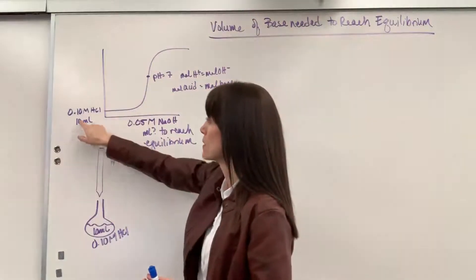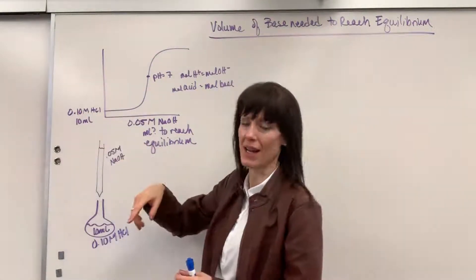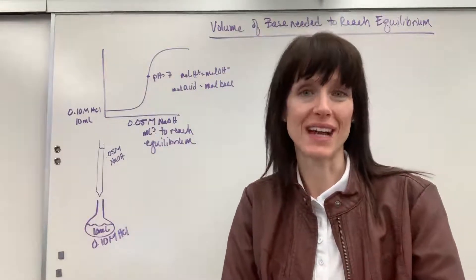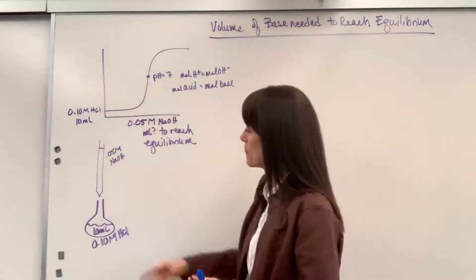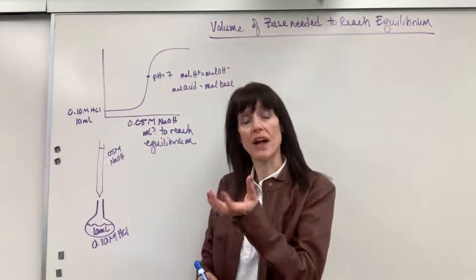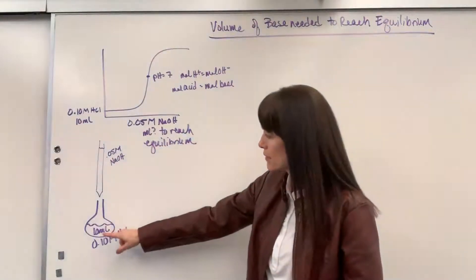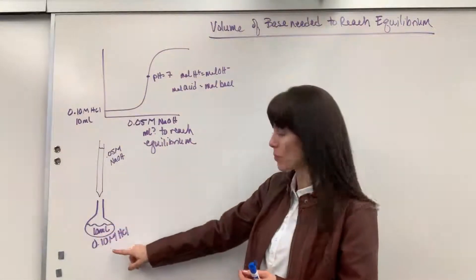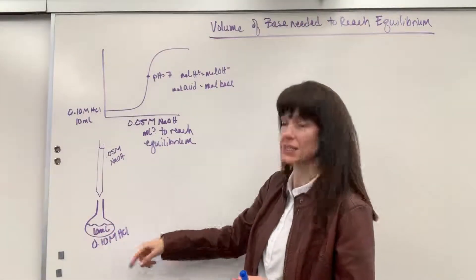So I set up a scenario here and want to walk you through it. We are going to begin with 10 mils of a 0.1 molar hydrochloric acid. This is a neutralization reaction by the way. I chose a strong acid and a strong base. We are going to have an Erlenmeyer flask and we are going to measure out with a pipette 10 mils of this 0.1 molar HCl.